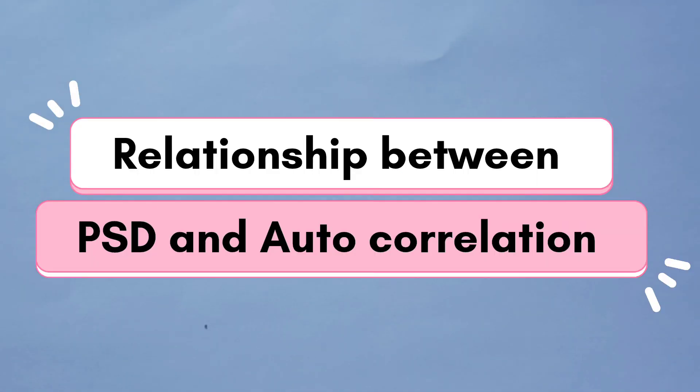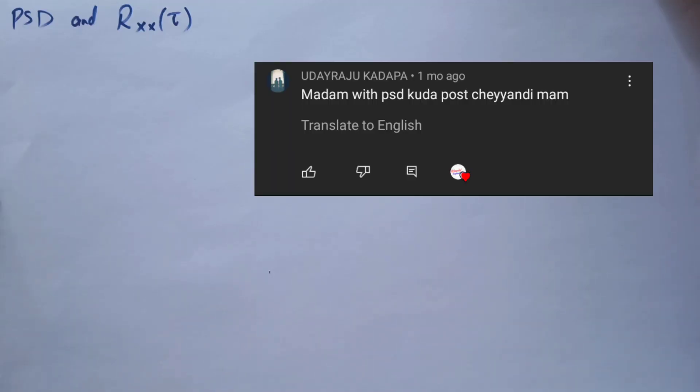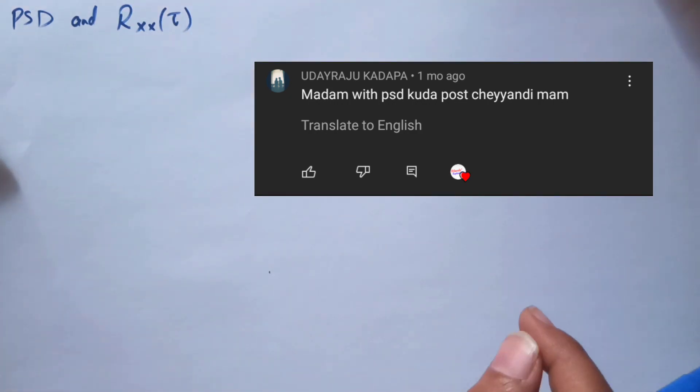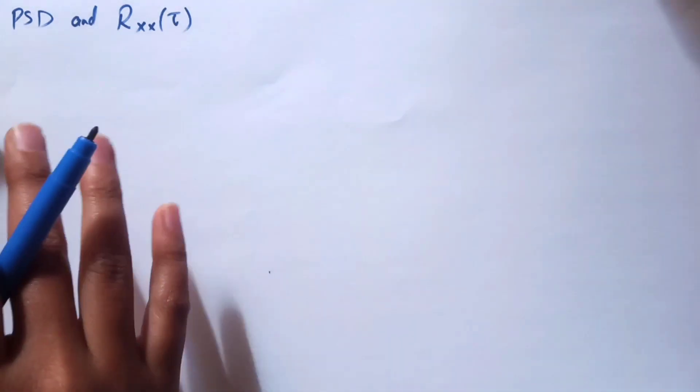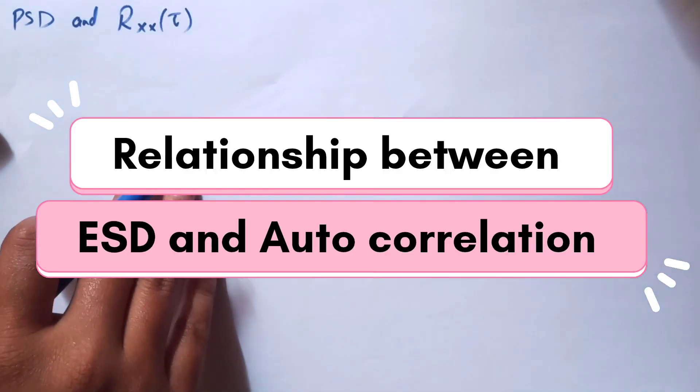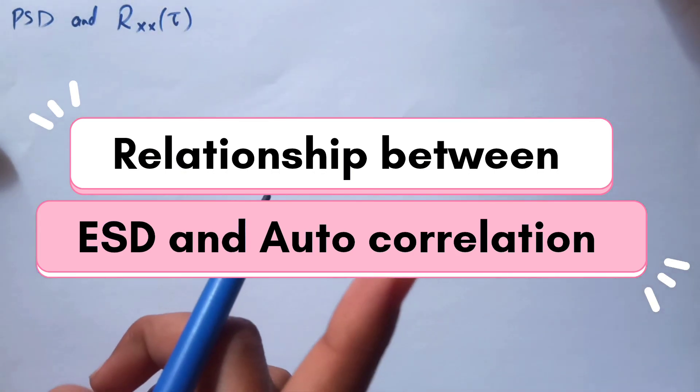Hey guys, welcome back to the channel. In this video we are going to discuss the relation between power spectral density and autocorrelation, also written as PSD and Rxx of tau. I'm making this video based on a comment on my previous video, which was on the relation between ESD and autocorrelation — so don't forget to watch that video also.